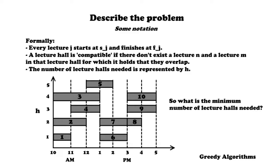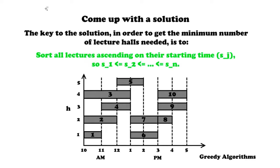The key to the solution is to sort all lectures ascending on their starting time s_j, so that the first starting time is less than or equal to the second, and the second is less than or equal to the third, and so on. Then for each lecture we check whether there's already a compatible lecture hall available, or whether we need to open a new one.